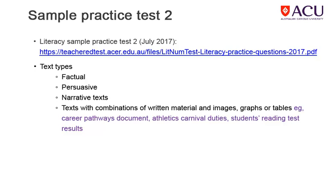In July 2017, ASA put an additional practice test on its website. There are 30 practice questions, 20 concerning four reading texts. These include a letter, a career pathways document, a document detailing duties assigned for an athletics carnival, and a document showing students' reading test results. So if you want some more practice reading questions, particularly reading different text types, do go to the ASA Lantite site if you haven't already.